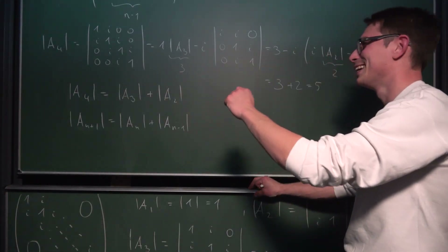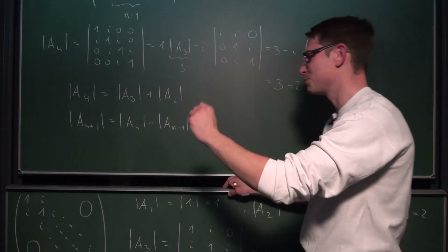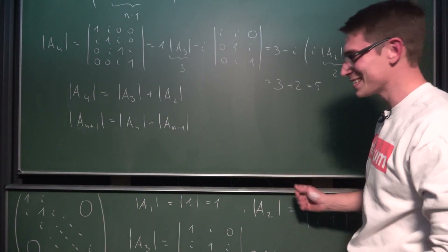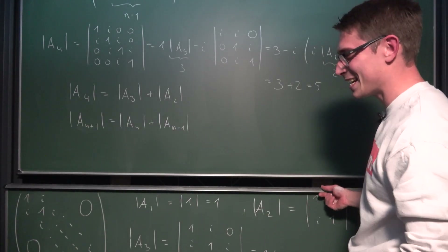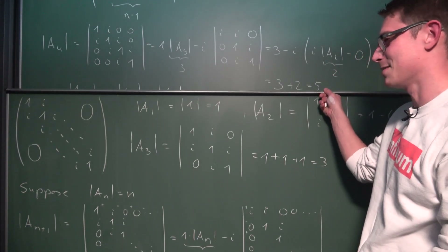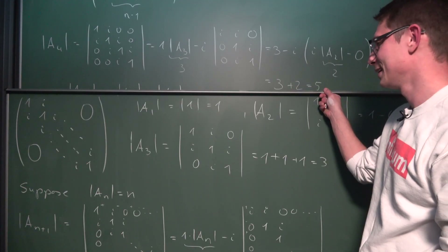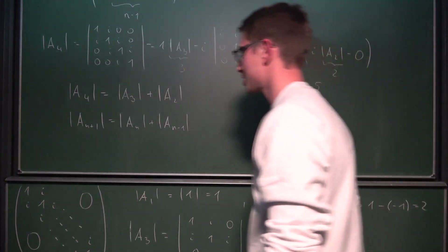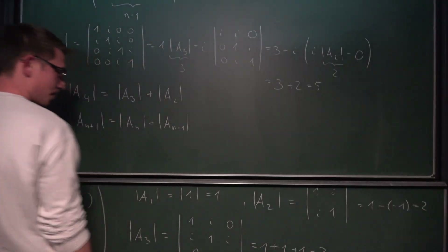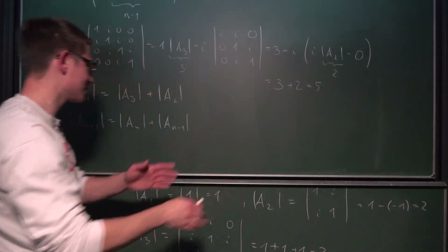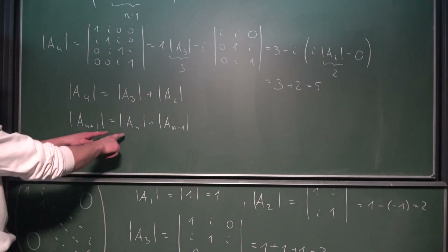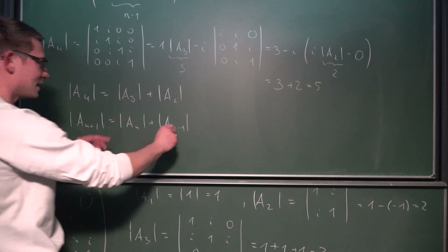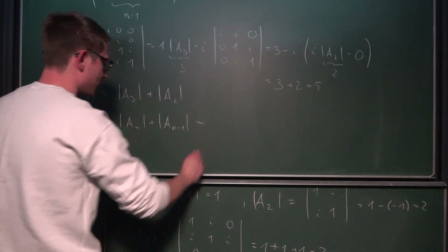That's Fibonacci! This right here is a generating matrix for Fibonacci numbers. So ignore all of the induction from before — since this recurrence holds, we have shown it in the general case. This ends up being Fibonacci. That is freaking cool.